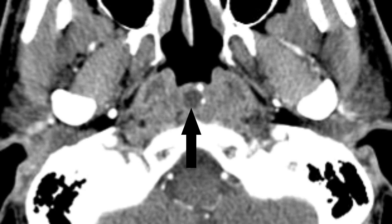On CT, the lesion appears as a low-attenuation, non-enhancing midline cyst in the nasopharynx. Bone structures are typically intact.